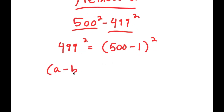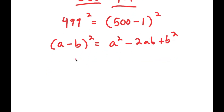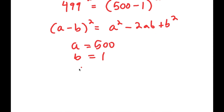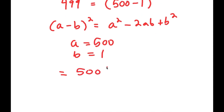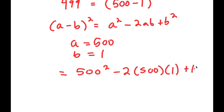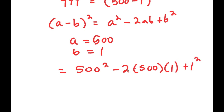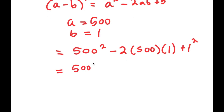If I have something in the form (a − b) squared, this is equal to a squared minus 2ab plus b squared. In this case a is 500 and b is 1, so this turns into 500 squared minus 2 times 500 times 1 plus 1 squared, which simplifies to 500 squared minus 1,000 plus 1.